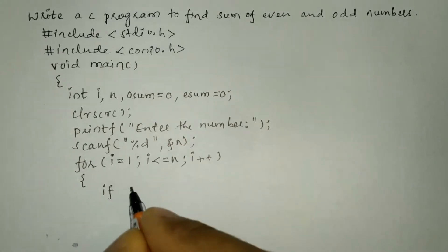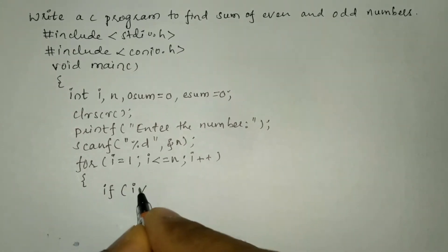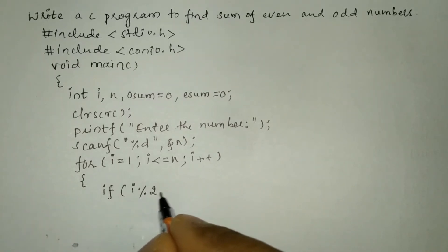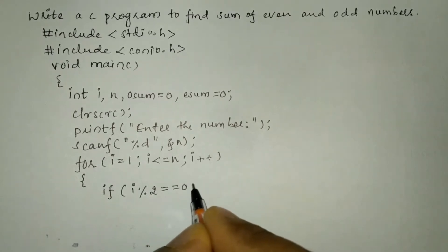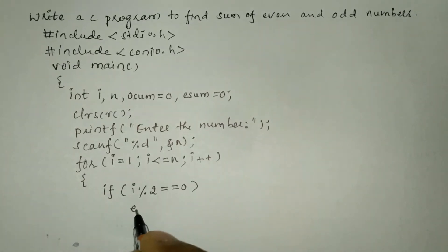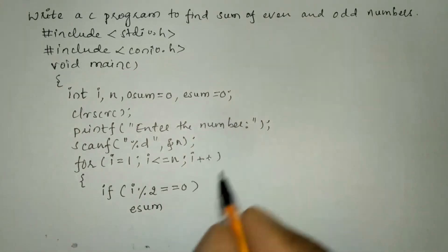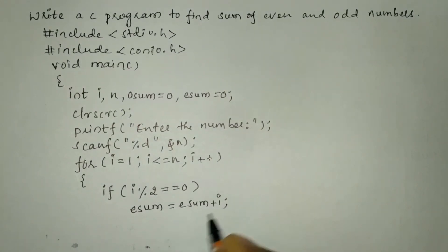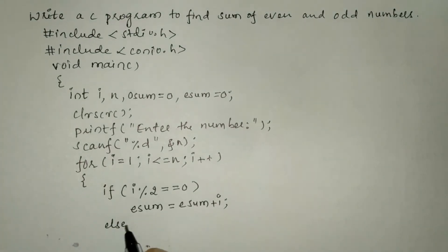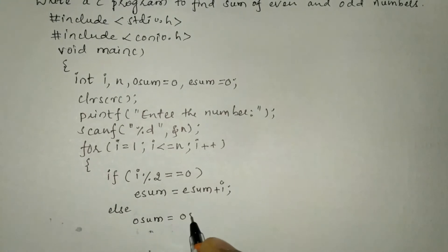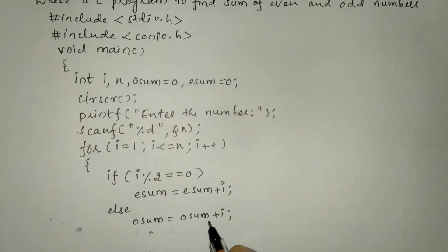Inside the loop we check the condition: if i modulo 2 equals 0 — meaning i is exactly divisible by 2 with no remainder — then it is an even number. We calculate the sum of even numbers using esum: esum = esum + i. Otherwise, in the else part, we accumulate the odd sum: osum = osum + i.